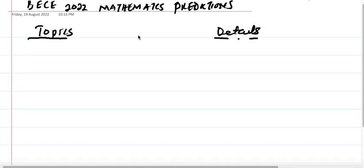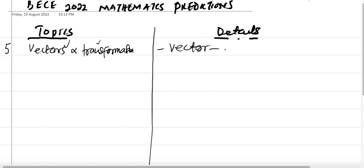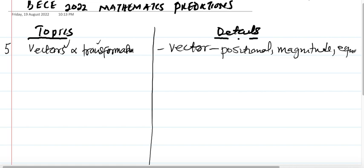The fifth topic is Vectors and Transformation. Vectors will surely come. Transformation is likely — about 90%. The details under vectors include positional vectors, magnitude of a vector, and vector equations.